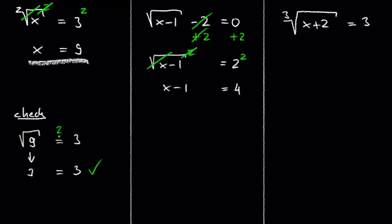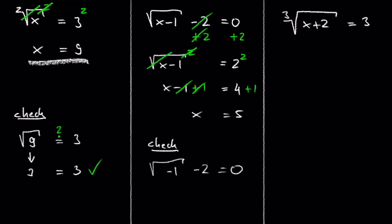After adding 1 on both sides of the equation, we get x equals 5. Don't forget to check the solution. We can check by substituting 5 for x: 5 minus 1 is 4, and the square root of 4 is 2. And 2 minus 2 is 0, so we solved the problem properly.